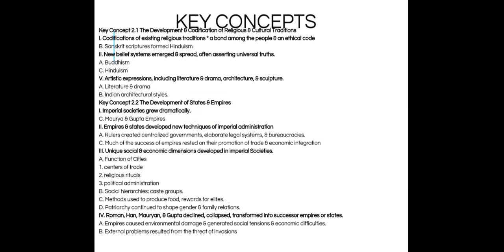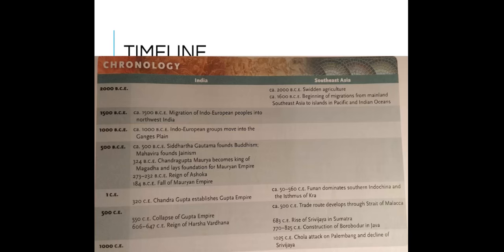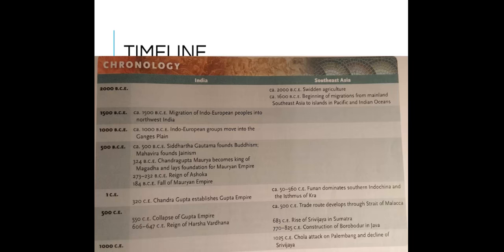Our key concepts include Sanskrit, Buddhism, and Hinduism, new types of literature and drama, the rise of the Maurya and the Gupta, new types of government systems, and more functions of cities. Take a look at our timeline — especially note 1500 BCE, the migration of the Indo-European people. That does matter and we'll talk about why in just a moment.